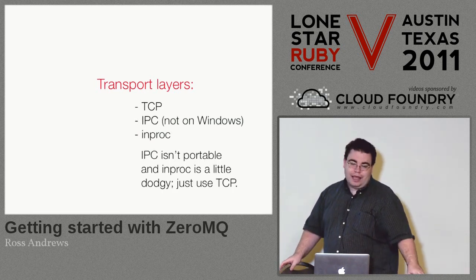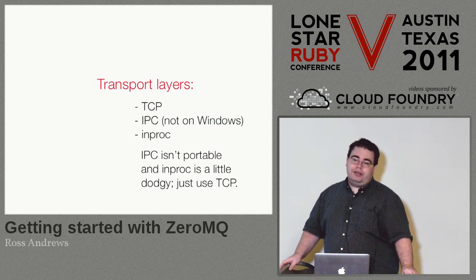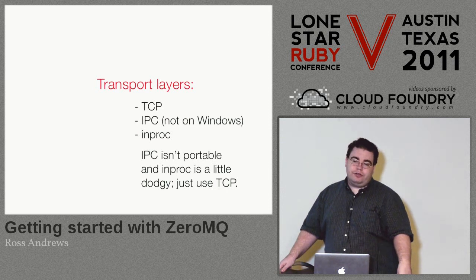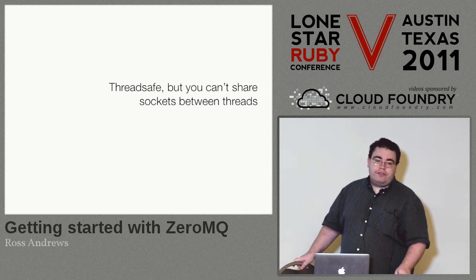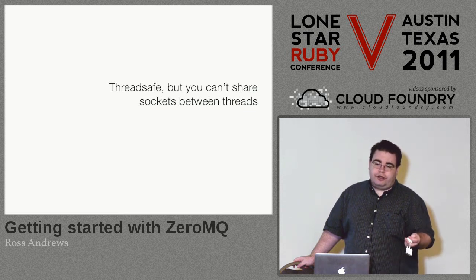IPC doesn't work on Windows because Windows has a different model of IPC — it doesn't use POSIX IPC. No one's yet written a way to make ZeroMQ talk IPC on Windows. In-proc acts a little differently too: it requires you to bind to a port before you can connect, and some things like that. In reality you're better off just using TCP for everything — it's fast enough you'll never even notice. It's also thread safe, but you can't share sockets between threads. If you need threads to share data, just send the data across as a ZeroMQ socket.